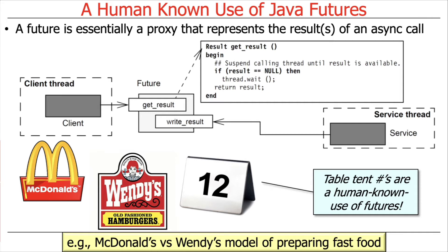The problem, of course, is the food can get a little stale after a while. So the alternative approach, pioneered by other fast food restaurants like Wendy's, was to cook your food to order. In that model, when you place your order, they will not make you stand there synchronously waiting for the food to be cooked — because that would take too long and it would make the revenue go down since they couldn't get people through the cash register fast enough. So instead, they hand you a table tent number or a receipt with a number on it, and you go off and check your phone or read the newspaper, or talk to your friends, waiting for your food to get done.